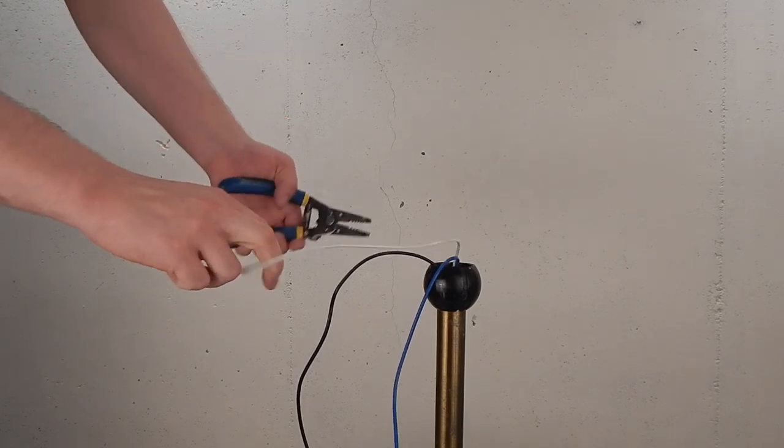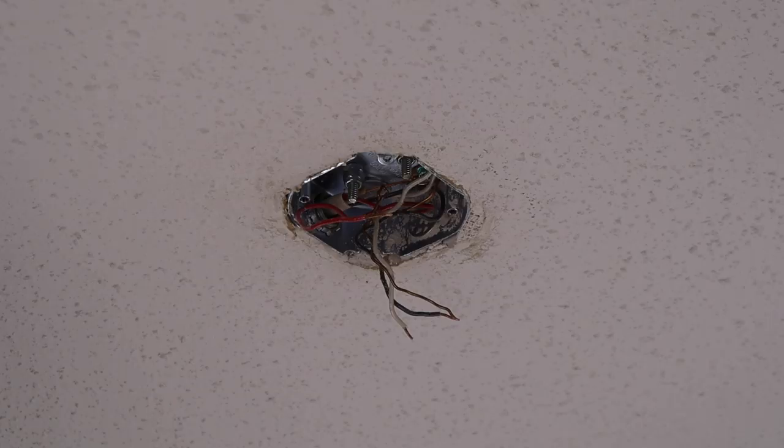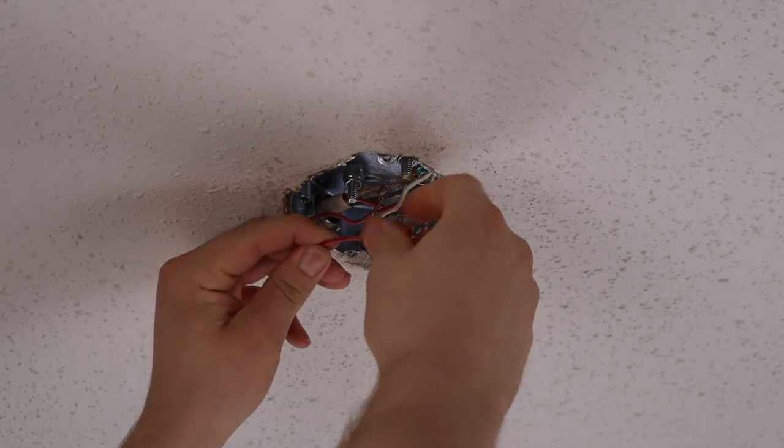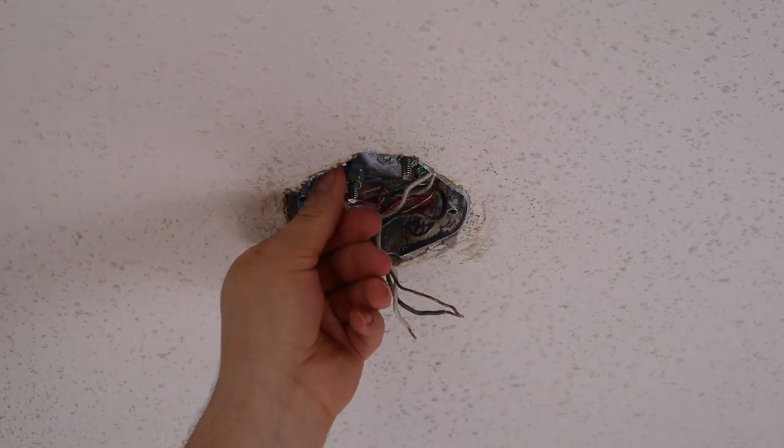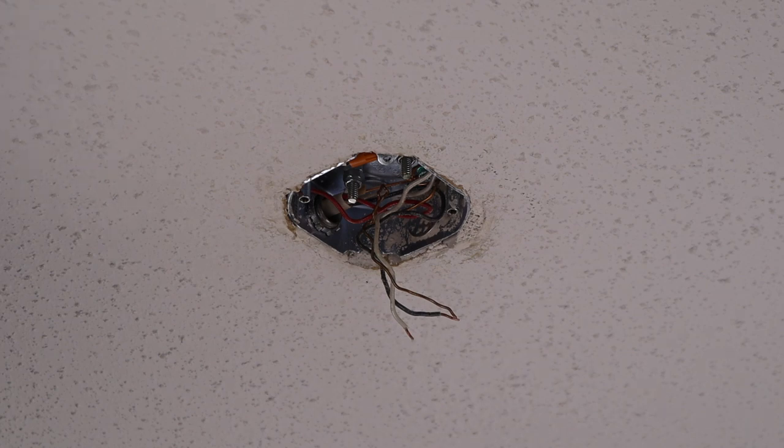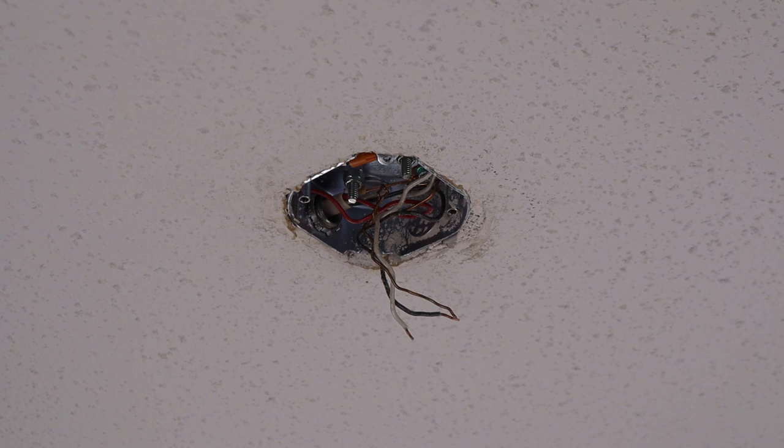We will now move to the ceiling. Locate the mounting bracket. If you have an extra wire for separate light kit control, you can cap it and tuck it up into the box. Alternately, if you have an installation that utilizes two separate switches, one for the light and one for the fan, this wire can still be used for separate light kit control. Simply connect the blue wire from the fan to it during installation.